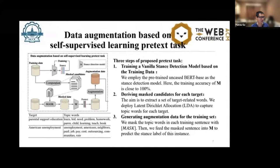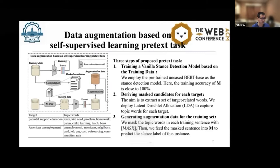In detail, there are three steps of the proposed pre-test tasks. The first is training an overfitting stance detection model based on the training data — we employ the pre-trained BERT-base as the stance detection model, where the training accuracy of model M is close to 100%. The second step is deriving mask candidates for each target, aiming to extract a set of target-related words, using LDA topic modeling to capture topic words for each target. The third step is generating augmentation data for the training set: we mask the topic words in each training sentence with a special token, then feed the masked sentence into model M to predict the stance label of this instance.